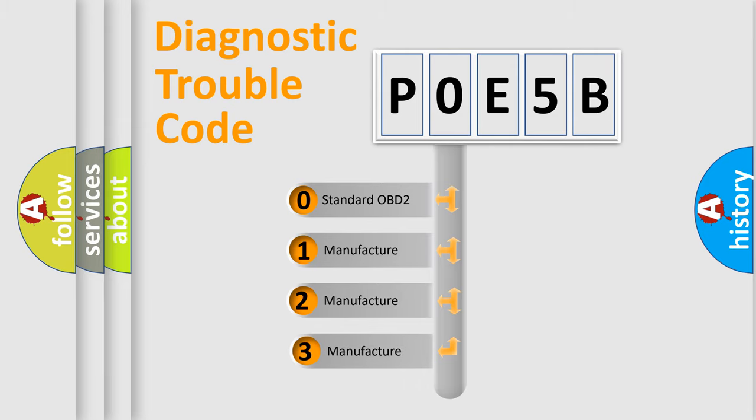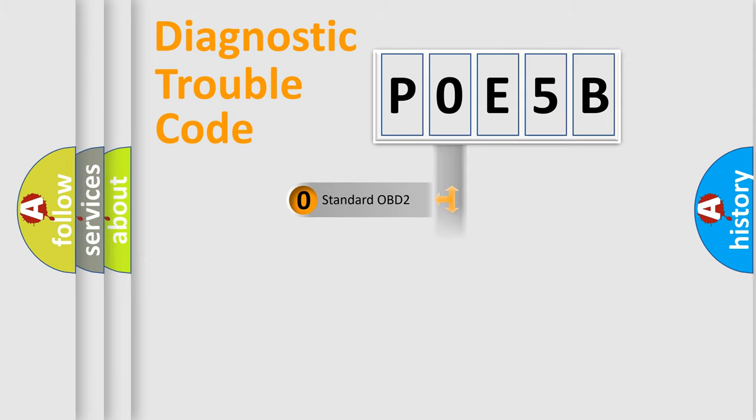If the second character is expressed as zero, it is a standardized error. In the case of numbers 1, 2, or 3, it is a manufacturer-specific error. The third character specifies a subset of errors.